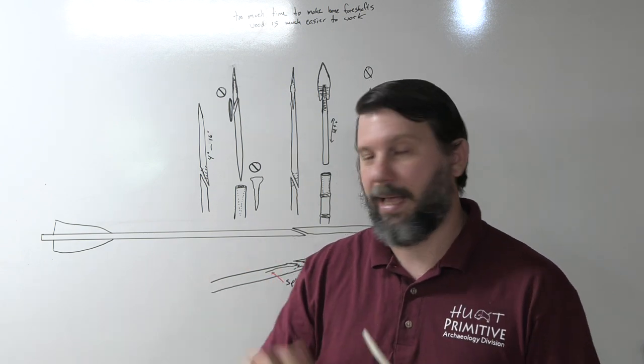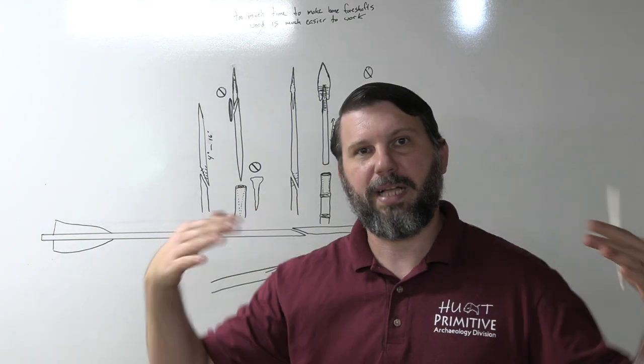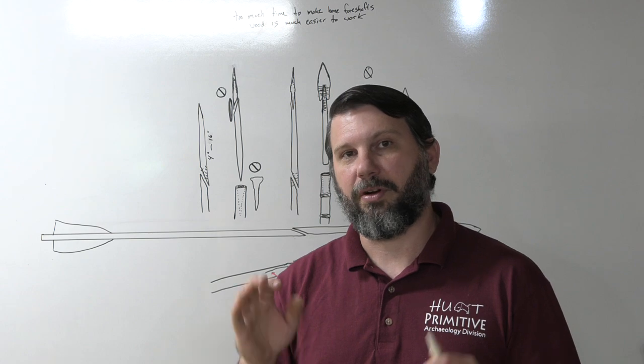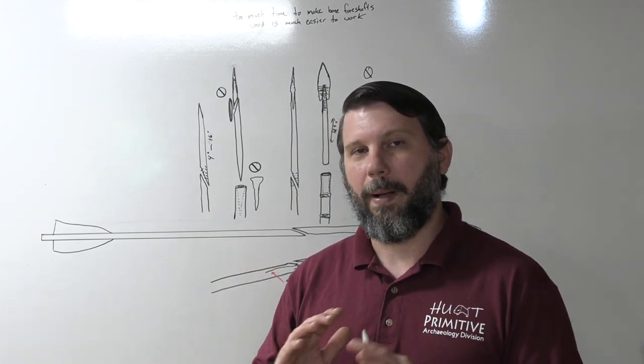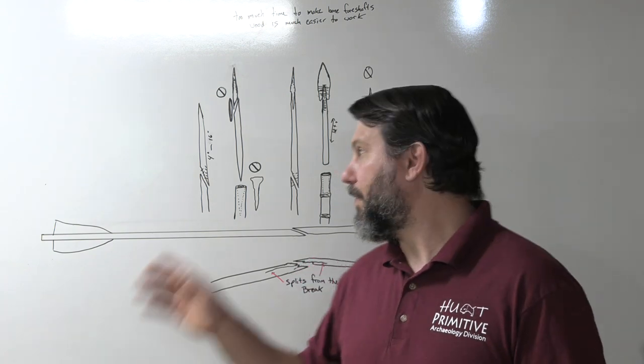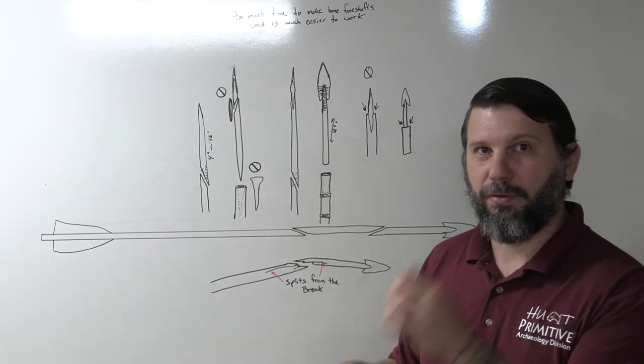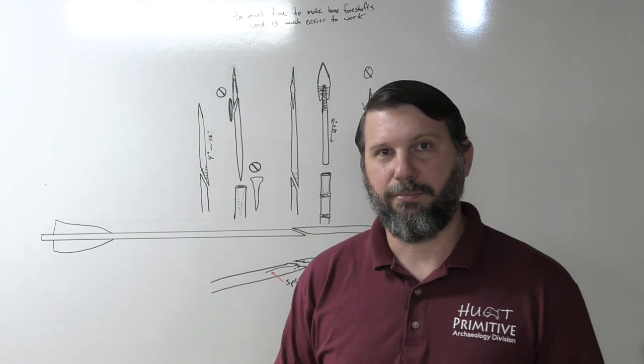Glue it with a pine pitch glue which we know has been around for a very long time, and then wrap it with animal tendons. That creates a very secure hafting joint that can withstand a tremendous amount of force through penetration and also quite a bit of side to side flex. These lap joints are very strong and they're apparent on almost all of the pieces that we find within the beveled rods, bi-beveled rods, single beveled rods in the Clovis assemblage.